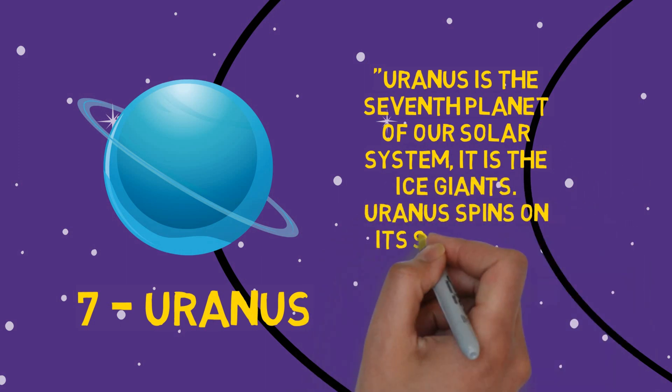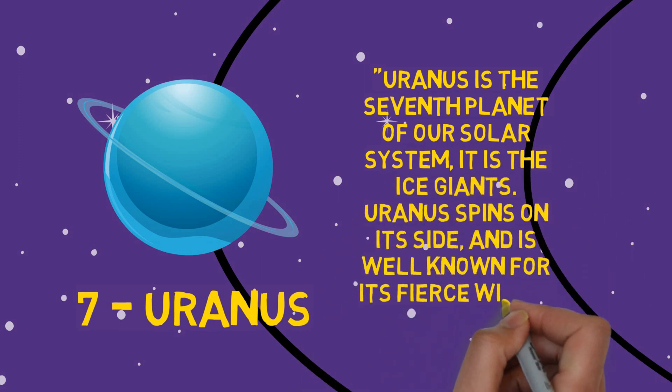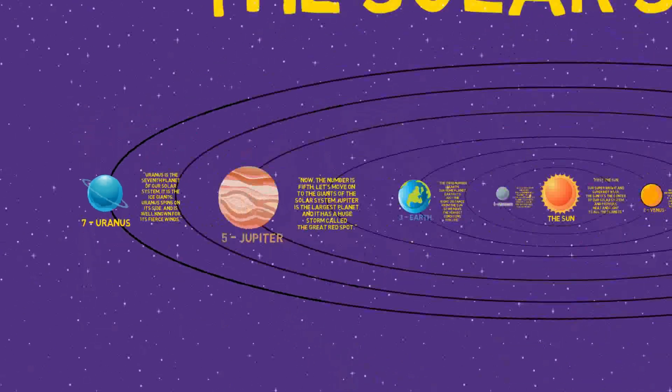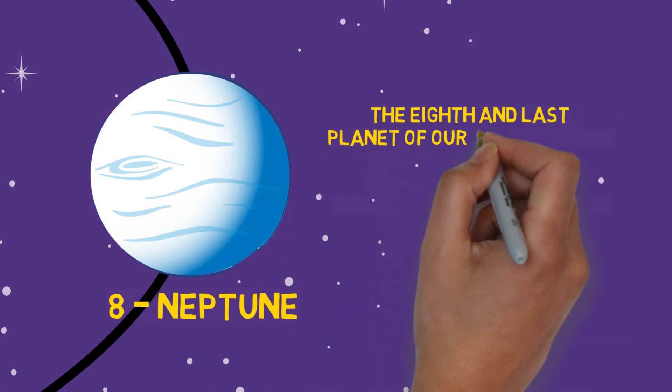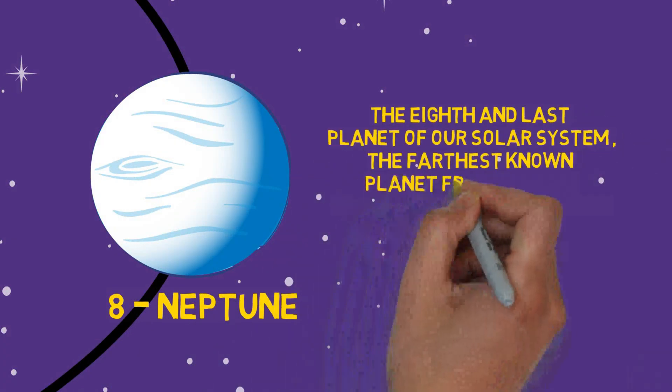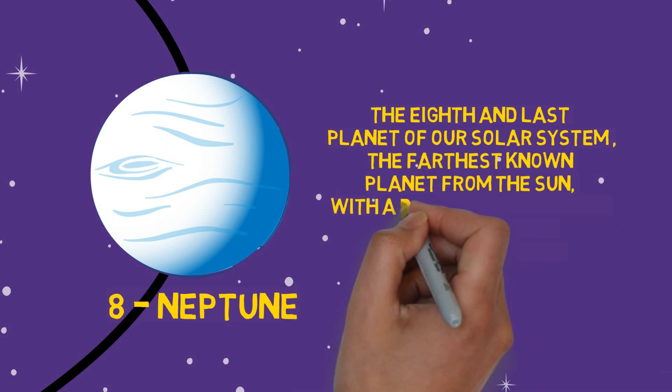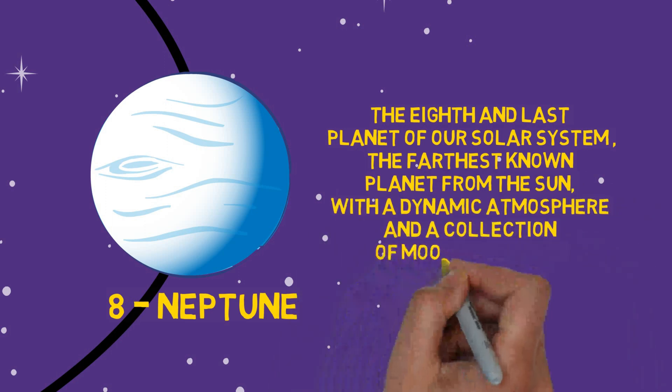Neptune is the eighth and last planet of our solar system - the farthest known planet from the sun, with a dynamic atmosphere and a collection of moons and rings.